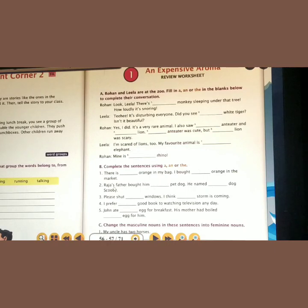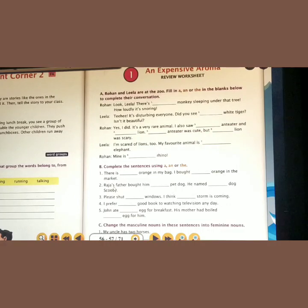Leela says: 'It's disturbing everyone. Did you see dash white tiger? Isn't it beautiful?' Leela is talking about a particular tiger, so we use the definite article THE. 'Did you see the white tiger? Isn't it beautiful?' The answer is: the white tiger.